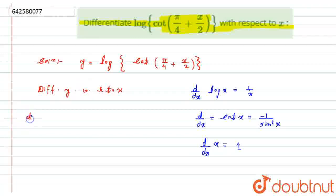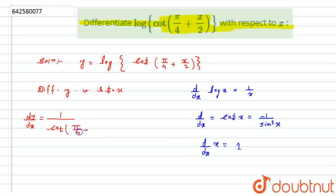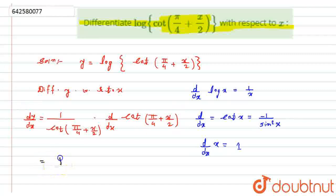What I will get? I will get dy/dx equal to 1 upon — according to the log formula — 1 upon cot of (π/4 + x/2), multiplied by, using the chain rule, the derivative of cot(π/4 + x/2). Here I have got cot of (π/4 + x/2).